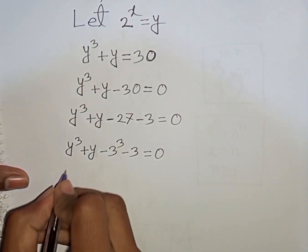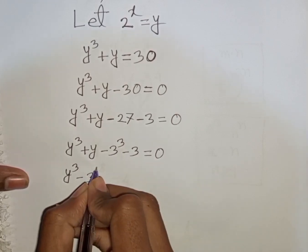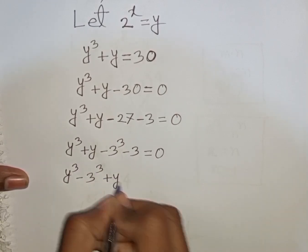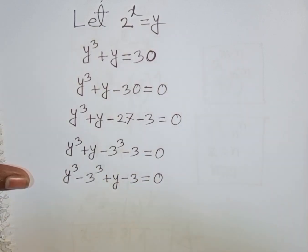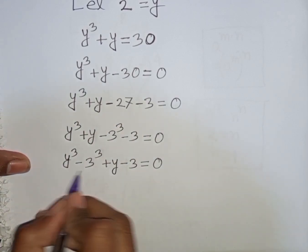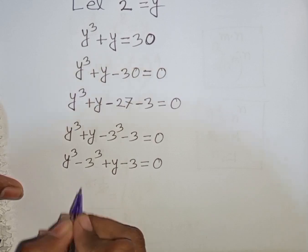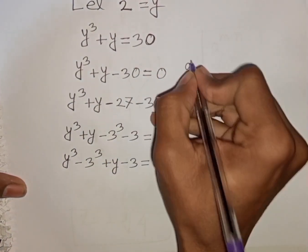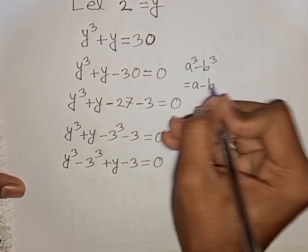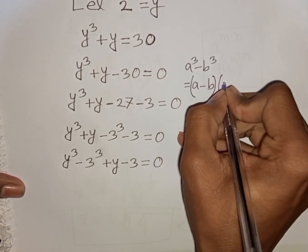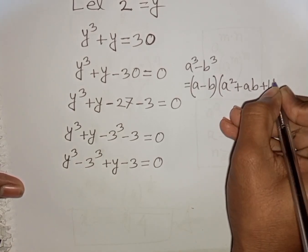Now we have y cubed minus 3 cubed plus y minus 3 is equal to 0. Here you can apply the formula a cubed minus b cubed, where a is y and b is 3. The formula is: a cubed minus b cubed equals a minus b, times a squared plus ab plus b squared.